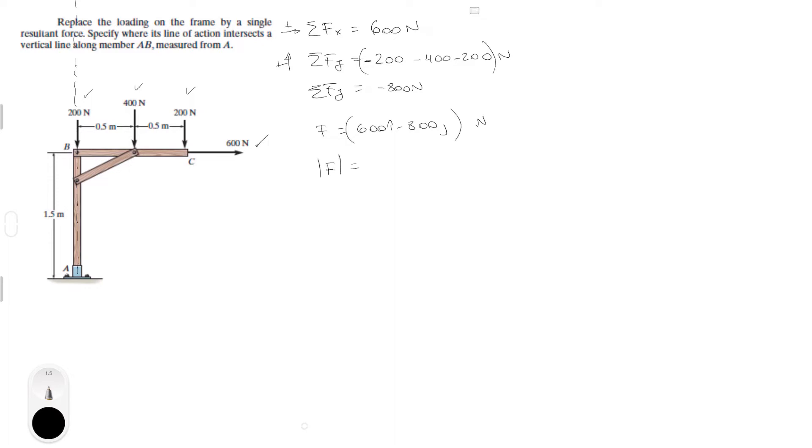This magnitude can be found by doing the X component squared plus the Y component squared which is equal to 1000 Newtons. The angle theta can be found by doing the tangent inverse of the Y component over the X component. Don't forget the signs when you input the values in this equation. And you would get that is equal to minus 53.13 degrees.